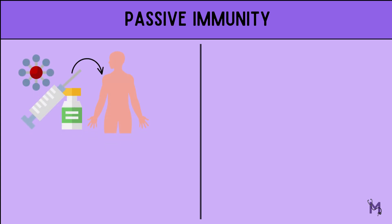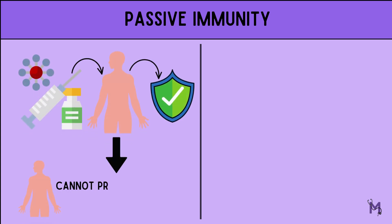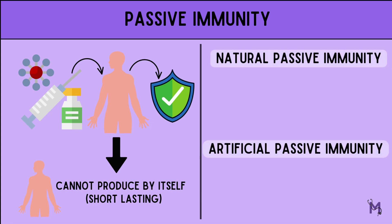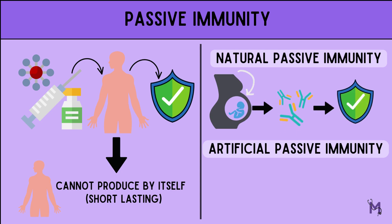Moving on, we have passive immunization. This is a process whereby pre-made elements of the immune system, like antibodies, are transferred to a person, and the body does not have to create these elements itself. Unlike active immunity, this is short-lasting. Passive immunity too can be naturally or artificially acquired. In cases where antibodies are transferred from the mother to the fetus, it is called natural passive immunity. On the flip side, artificial passive immunization is normally given via injections.